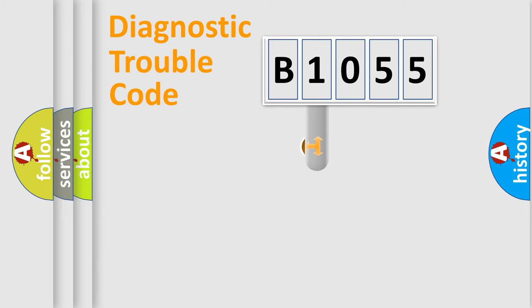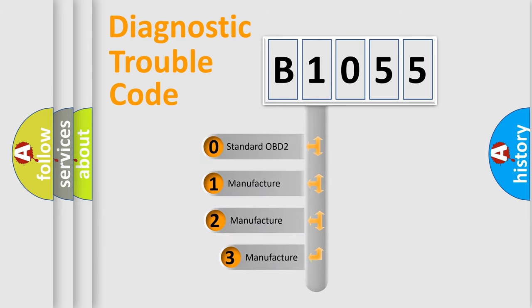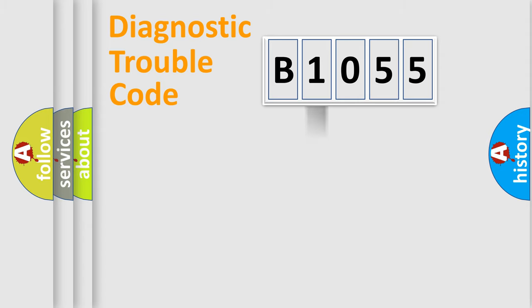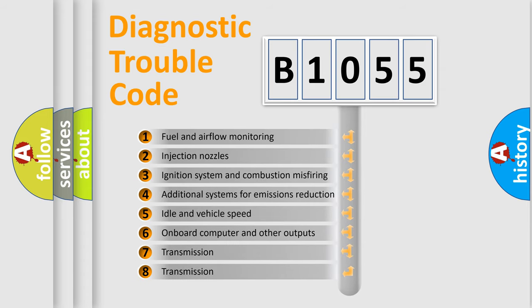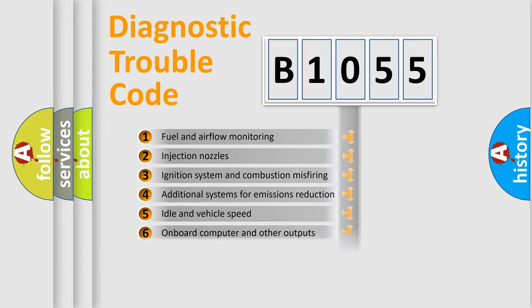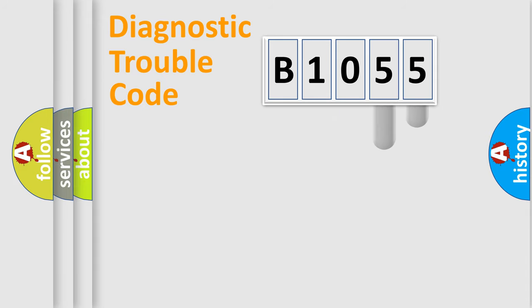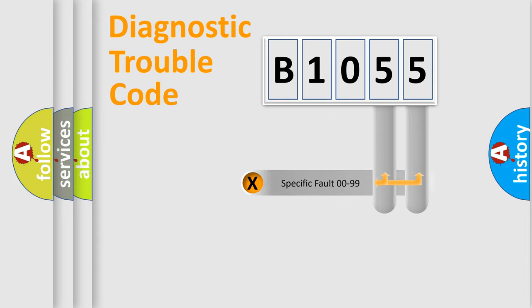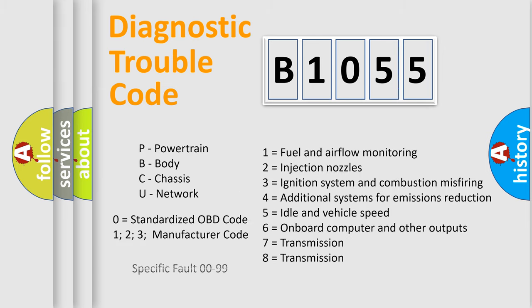This distribution is defined in the first character of the code. If the second character is expressed as zero, it is a standardized error. In the case of numbers 1, 2, or 3, it is a manufacturer-specific error expression. The third character specifies a subset of errors. This division is valid only for the standardized DTC code, and only the last two characters define the specific fault of the group. Such a division is valid only if the second character code is expressed by the number zero.